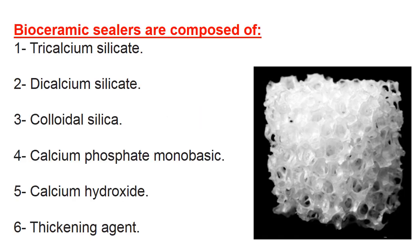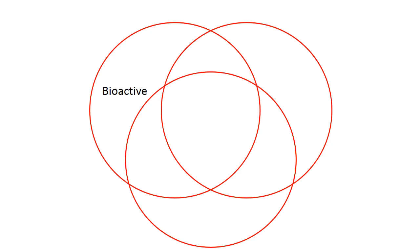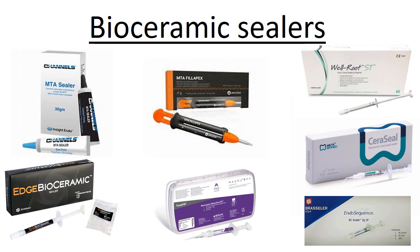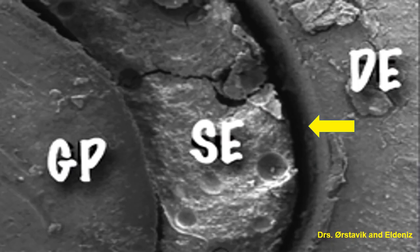Bioceramic was introduced for root canal obturation. It is composed of silicates, calcium, and phosphates. It is bioactive, biodegradable, and bioinert — meaning it is biocompatible and we can use it. There are many bioceramic-based sealers of different brands, and this sealer sits between the gutta-percha cone and the dentine, but we may still see voids.